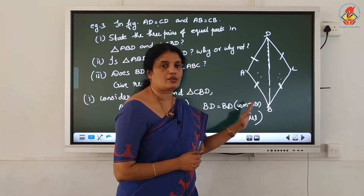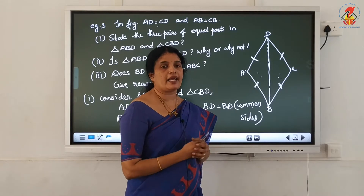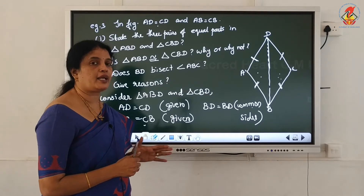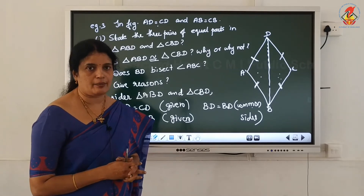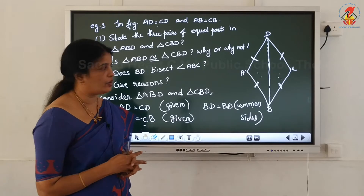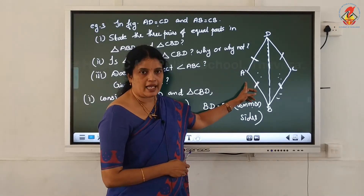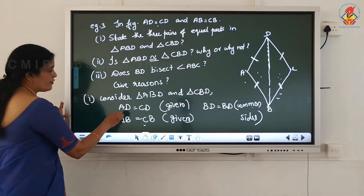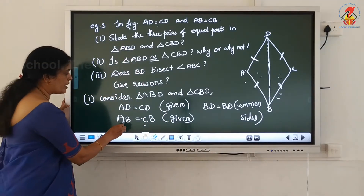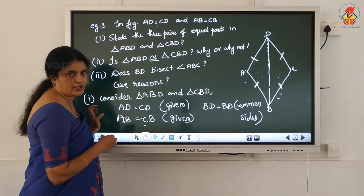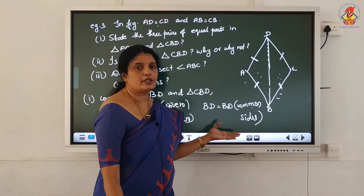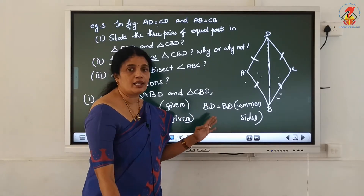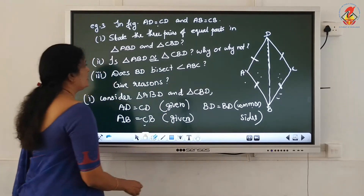Therefore, these 2 triangles are congruent. The reason is by SSS congruence criterion. We can prove that these 2 triangles are congruent because 3 sides are equal - the 3 sides of triangle ABD equal to the 3 sides of triangle CBD. The corresponding side of AD is CD. The corresponding side of AB is CB. BD equals BD - both are the same, common to both triangles.